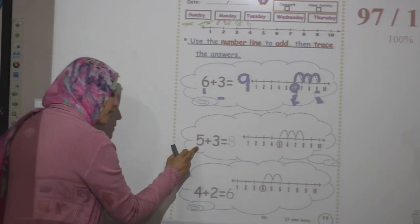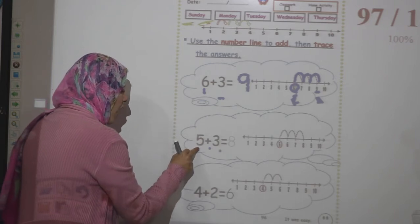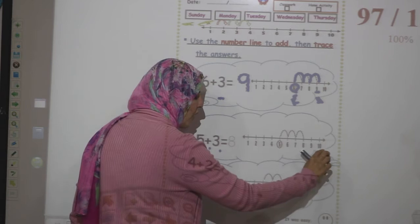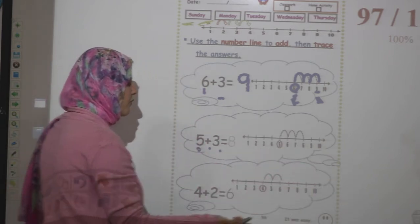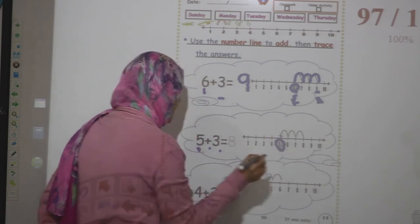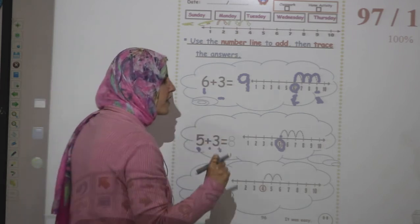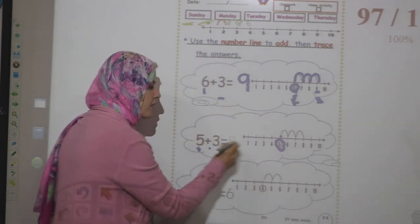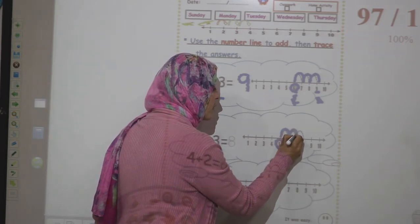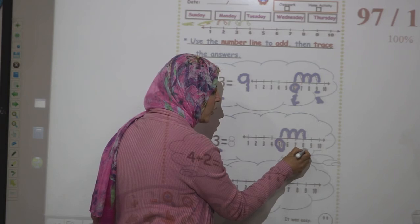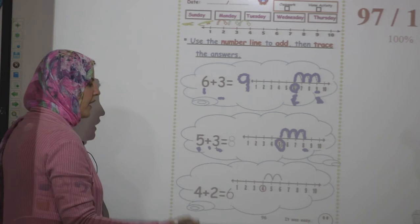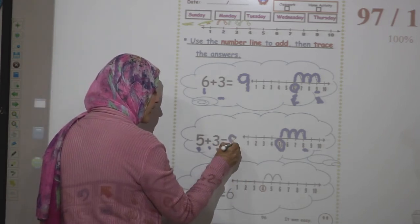Let's see another example: 5 plus 3. I point to the first number in the addition — what is this number? This is number 5. Can you see number 5 in the number line? Yes. I stop on number 5 and make a circle around it. Then 5 plus 3 — I have to jump 3 times. Let's jump together: 1, 2, 3. I stop on number 8. Then 5 plus 3 equals 8. How do we write number 8? Down snake, up snake.